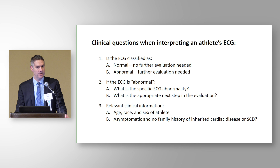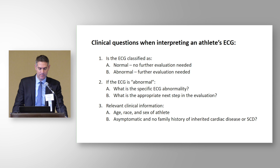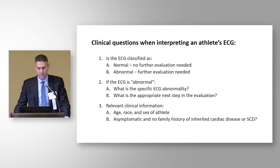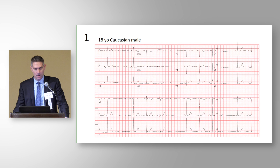When you're looking at an ECG, there are clinical questions to ask first. Number one: is this ECG normal or abnormal? That categorization leads to what comes next. If it's normal, there's nothing else to do. If it's abnormal, there's additional evaluation — and you need to identify precisely why it's abnormal so you can link it to appropriate next steps. Understanding the age, race, sex of the athlete, and whether they're asymptomatic or have a concerning family history, can also affect how you interpret the ECG.